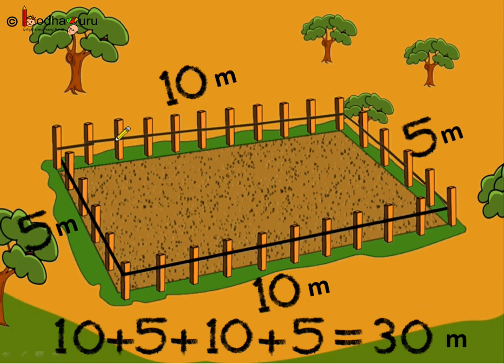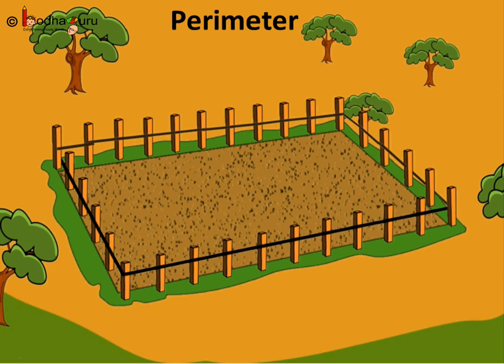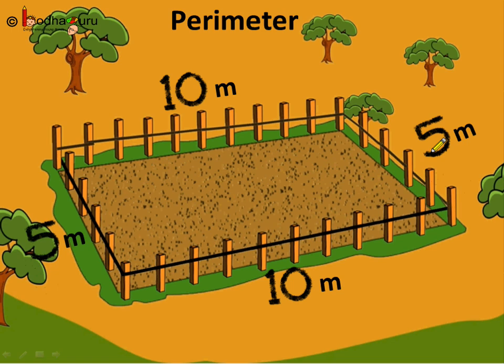Now if we look here what do we see? We see there are two sides which are longer and these are the lengths of this rectangle. This is 10 and this is 10. What about these two sides? They are known as the width of the rectangle as they have smaller length. And each of this side is equal to 5 meters.